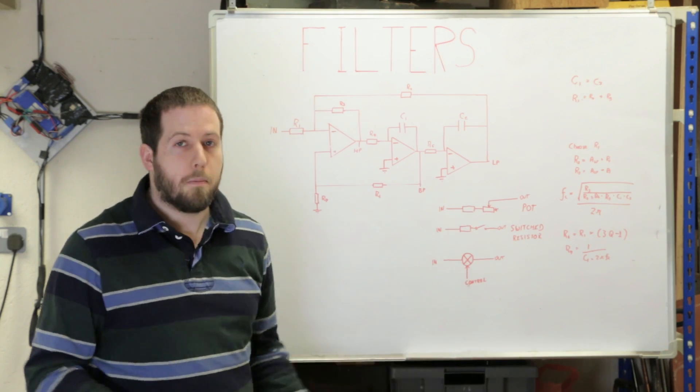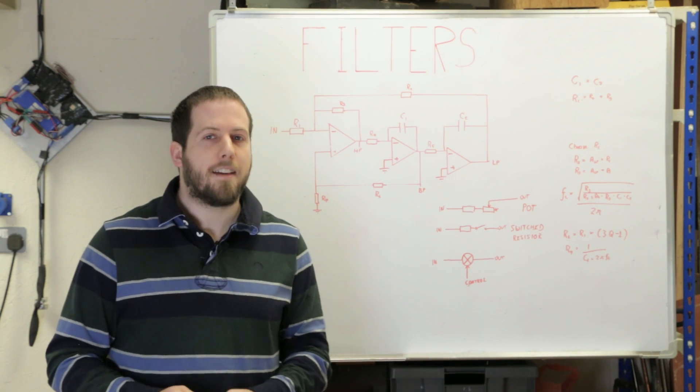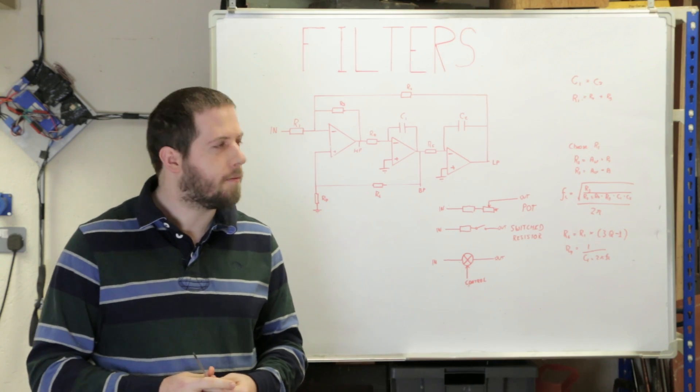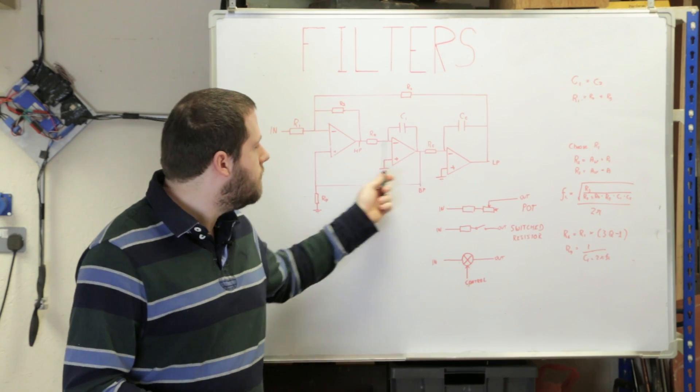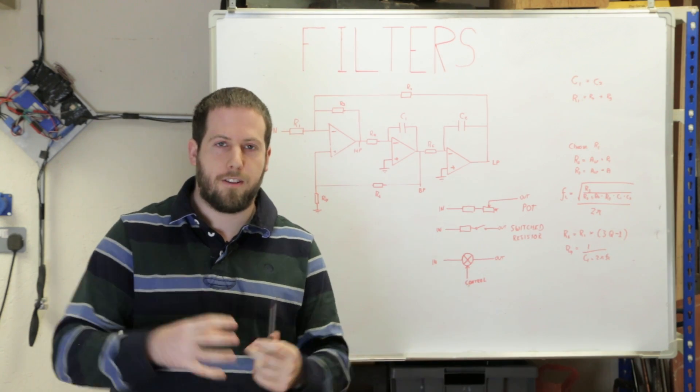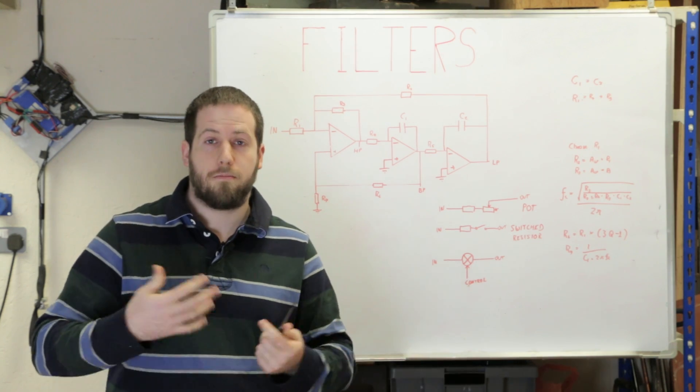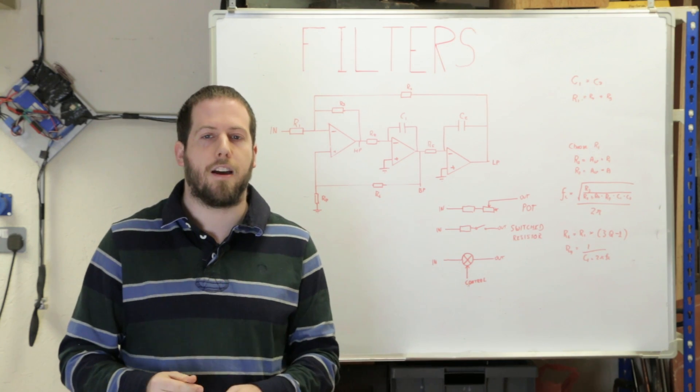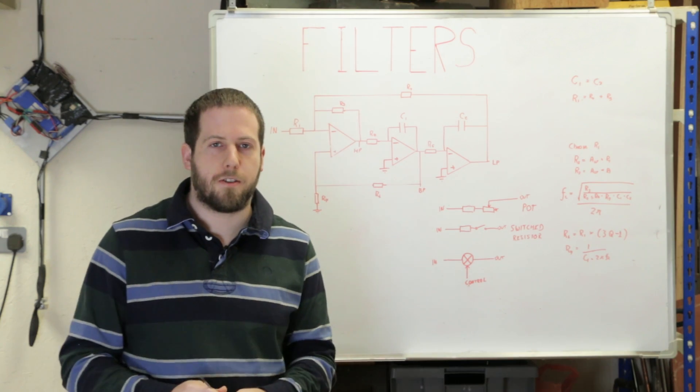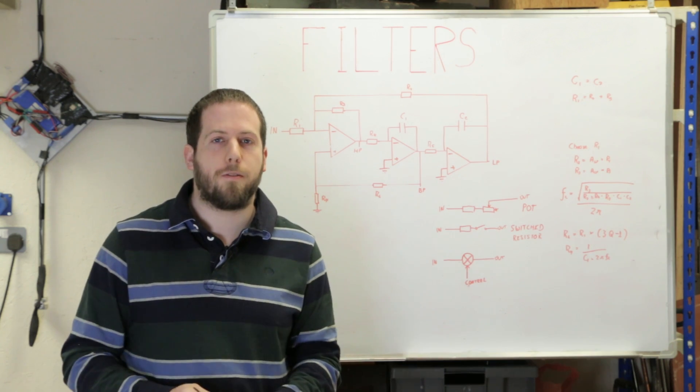This is a straightforward way of doing it but there are some downsides. Generally potentiometers aren't that accurate, maybe plus or minus 20 percent. And you've got to be changing two resistors at the same time, so you need a dual gang potentiometer. The downside is that the two potentiometers aren't necessarily going to track the same, and where they don't track the same you degrade the performance of the filter.